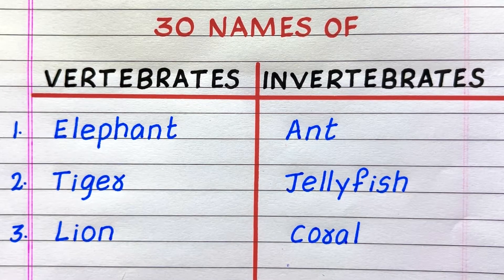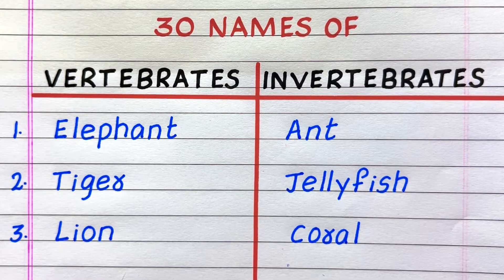First example of an invertebrate animal is ant, second jellyfish, third coral.